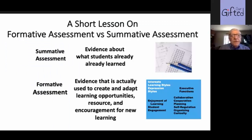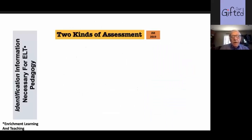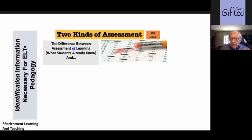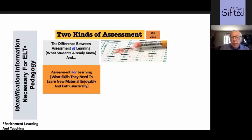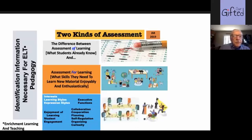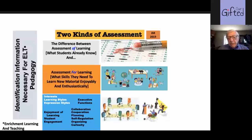We've already talked about formative and summative assessment and the difference between the two, so I'm going to skip that slide and move on to what this approach is all about. The difference between assessment of learning — basically scoring well on traditional tests — and assessment for learning is looking at things like enjoyment of learning, interests, learning styles, executive functions, collaboration, cooperation — all of those kinds of things that I believe are important in the repertoire of young people, especially in today's rapidly changing world, where high-level executive positions in almost every field are looking for these things just as much as grade point averages and rank in class.